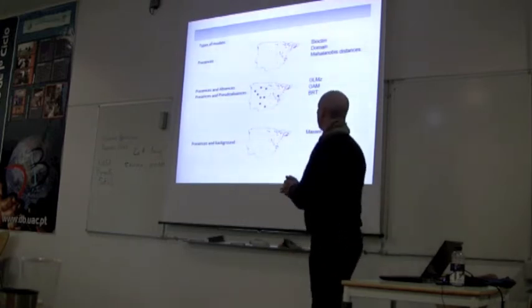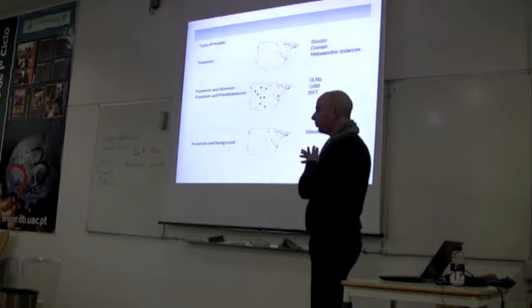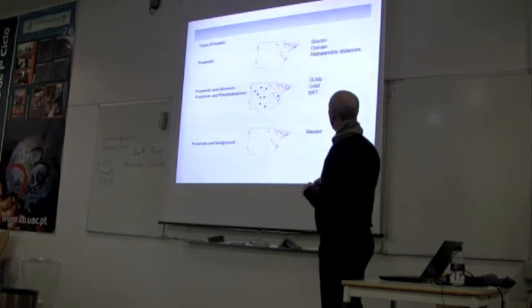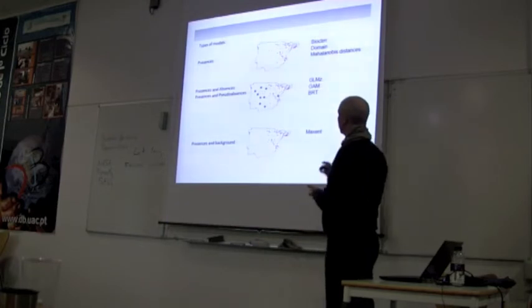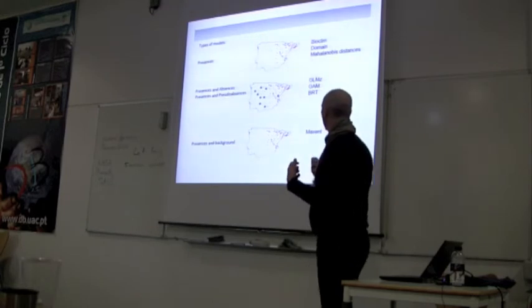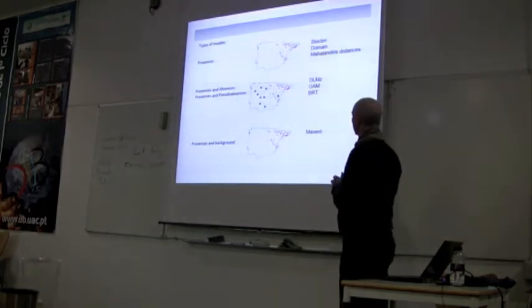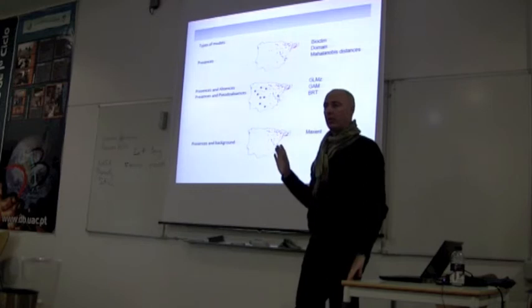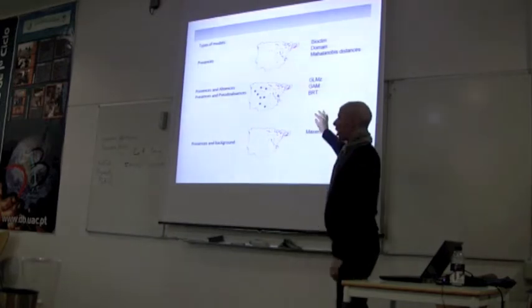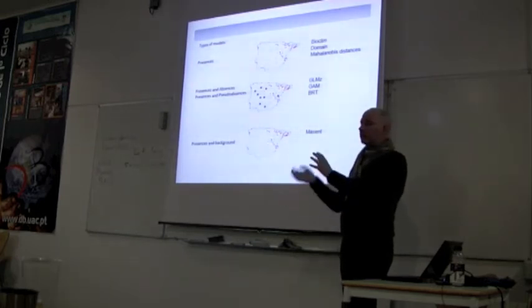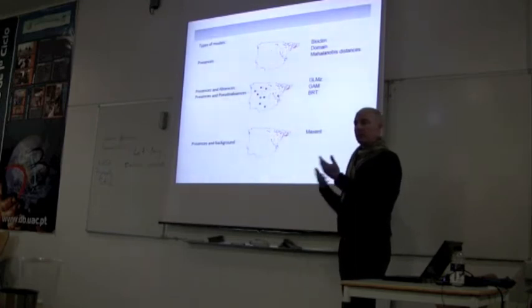So some classes that only use presences, that really only use information for presences, are Bioclim, if you're all in love, Domain, multivariate distance algorithms like Gower's. Some techniques that are set up to do presence-absence comparison are a lot of regression techniques, like GLM, GAM, and boosted regression trees, which are kind of hard to use if they perform very well. These also can be used with presences and pseudo-absences, or even with presences and background data. People have done that.